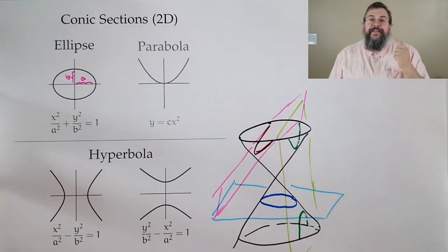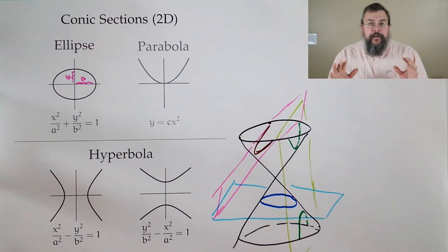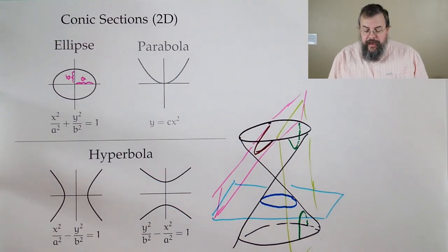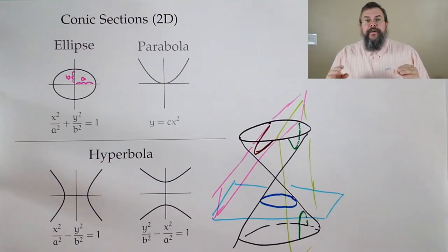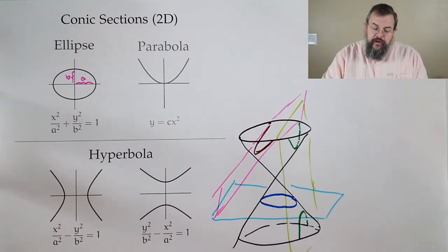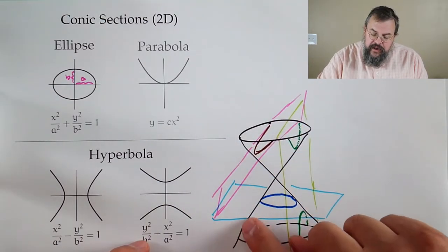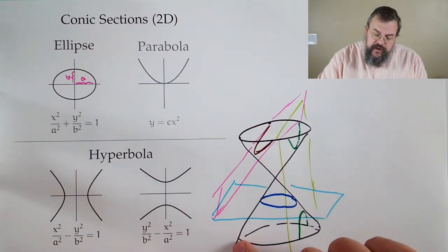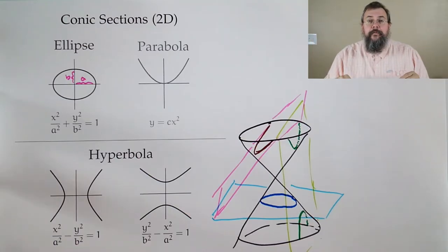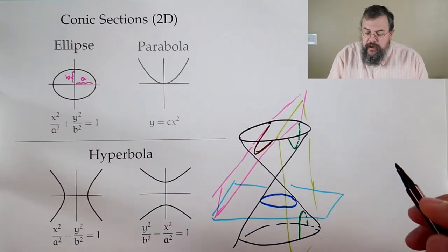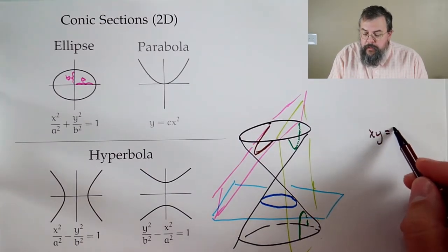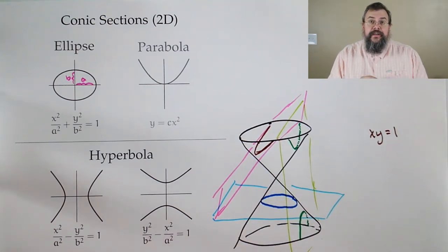That was the first question. The second question is: is this really everything you can get? The answer is kind of. You might consider a line as a conic section — you can imagine a slice that just touches the edge. But more importantly, what about an equation such as XY equals 1? Is that a conic section, and if it is, which one is it?